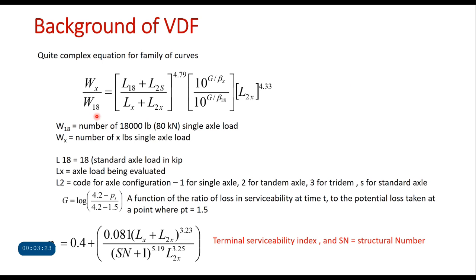The ratio w_x / w_18 is given by this equation, where w_18 is the number of 18,000-pound (80 kN) single axle load applications and w_x is the number of x-pound single axle load applications that cause the same type of failure in the pavement. The remaining parameters include: l_18 as the standard axle load in kilo-pounds, l_x as the axle load being evaluated, l_2 as the code for axle configuration (1 for single axle, 2 for tandem axle, 3 for tridem, S for standard). The parameter g is given by a related equation, where p_t is the serviceability index and SN is the structural number. This equation is quite complicated and difficult to remember.